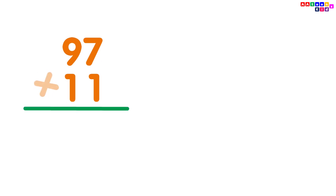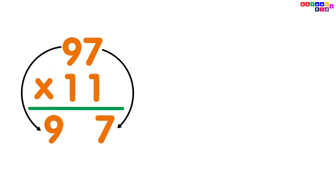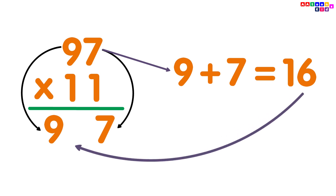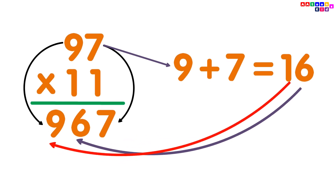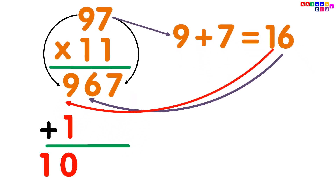97 multiplied by 11. Simply write the digits 9 and 7. Then add the digits: 9 plus 7 equals 16. Put the 6 between digits 9 and 7, then add 1 with 9. You will get your answer 1067.